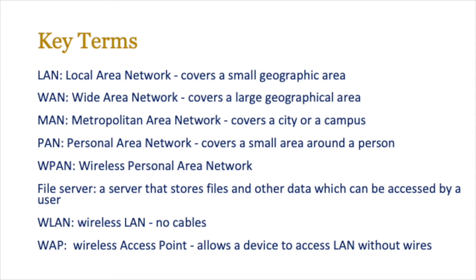Let's start with some key terms. There are a lot of key terms in this particular unit, so start off by jotting these down - pause the video and make sure that these are in your exercise book. Things like local area network, wide area network, personal area network, and metropolitan area networks. You know about wireless personal area networks - just make sure that distinction is clear. We're also going to be looking at things like file server, wireless LAN, and what a wireless access point is all about. Just make sure that you have those in your exercise book.